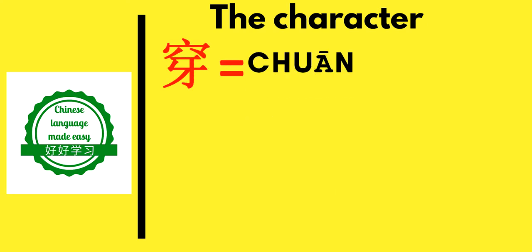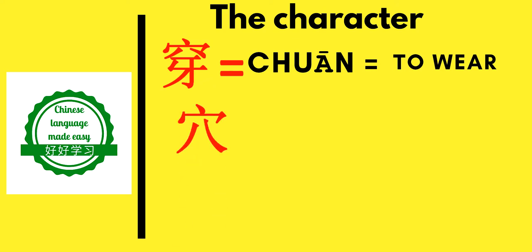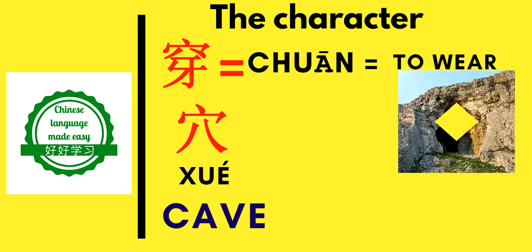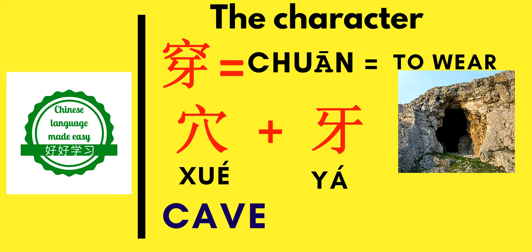The first character of the lecture is 穿 (chuān). Chuān is a verb which means 'to wear.' This character is made from two radical signs. The first one is 穴 (xué), which means 'a kill' or 'a hole,' as you can see in the picture.